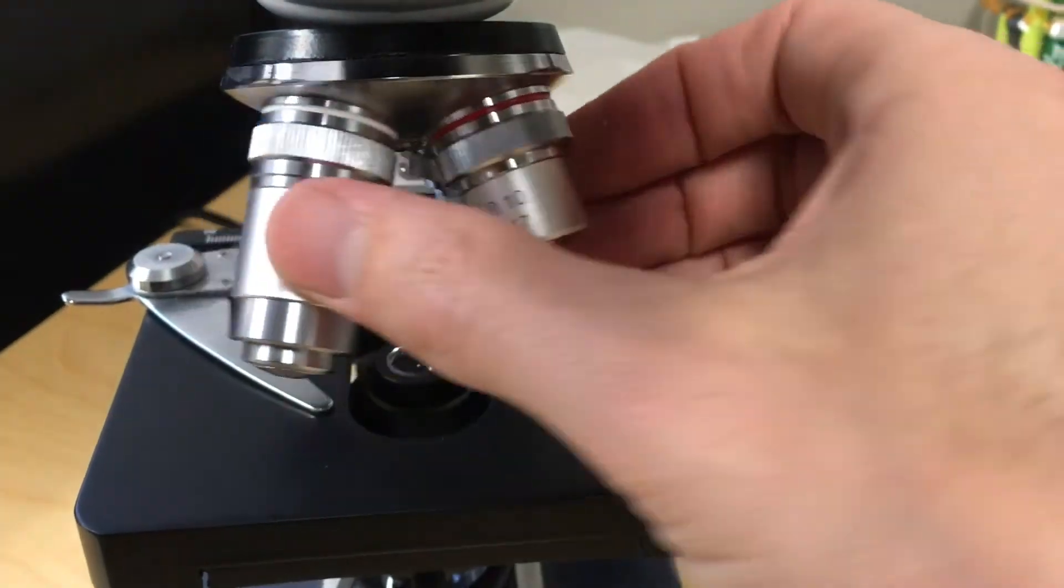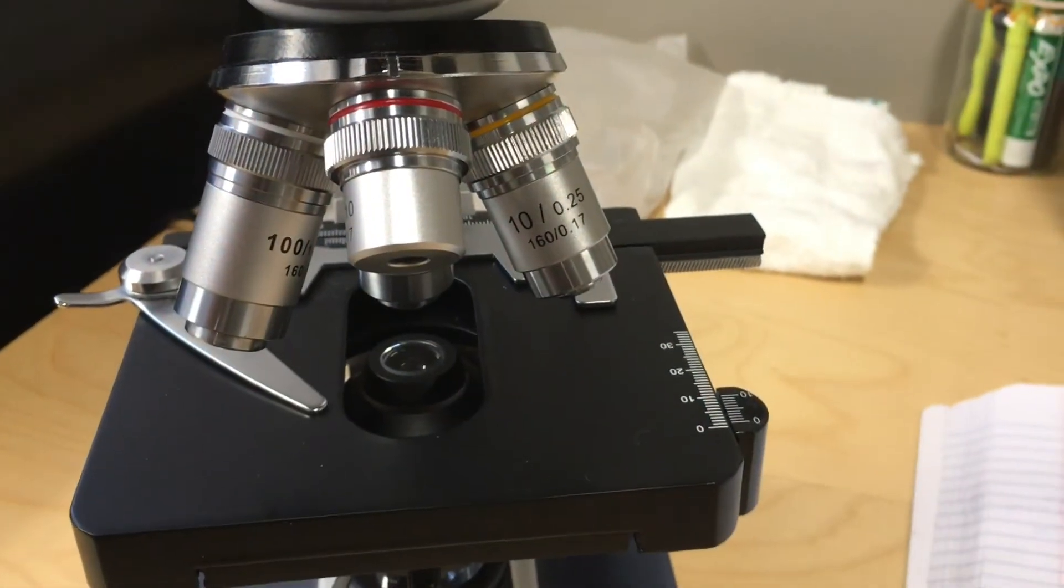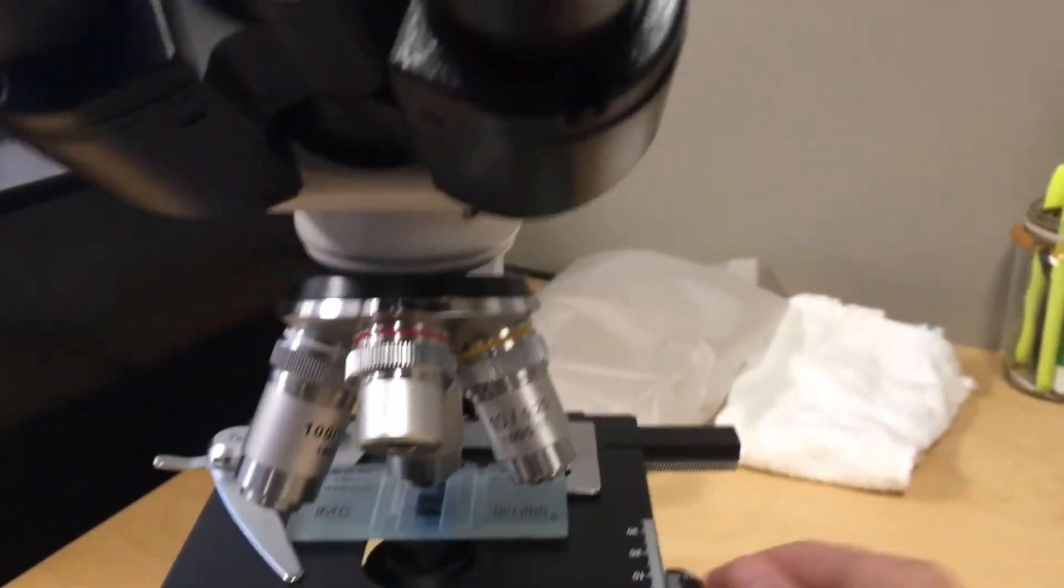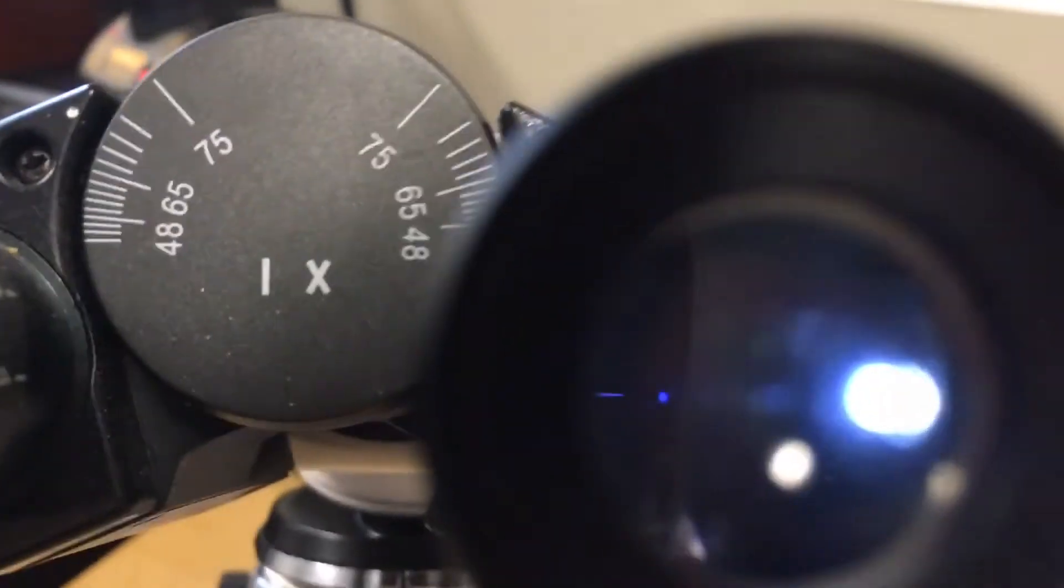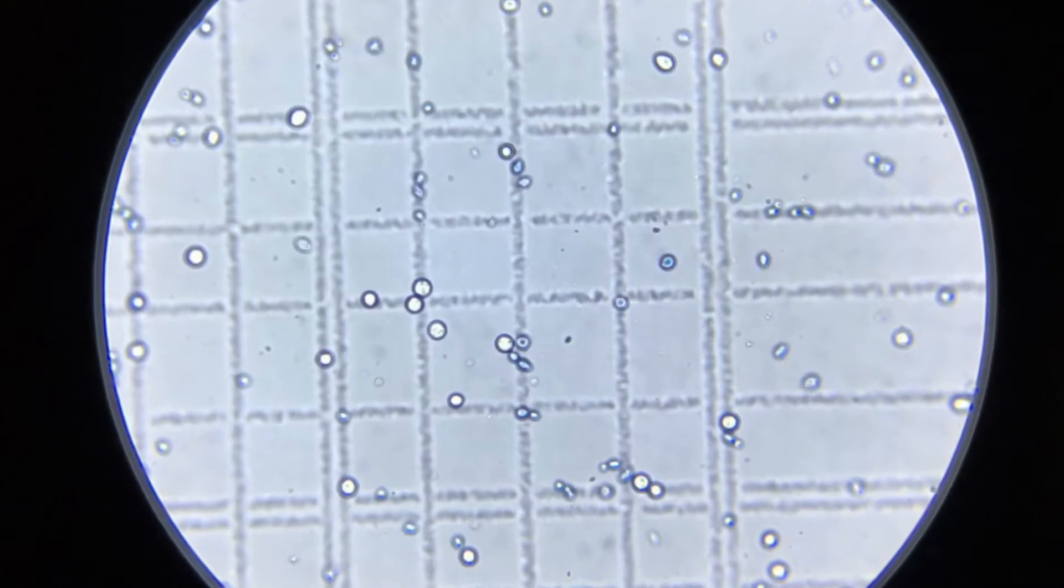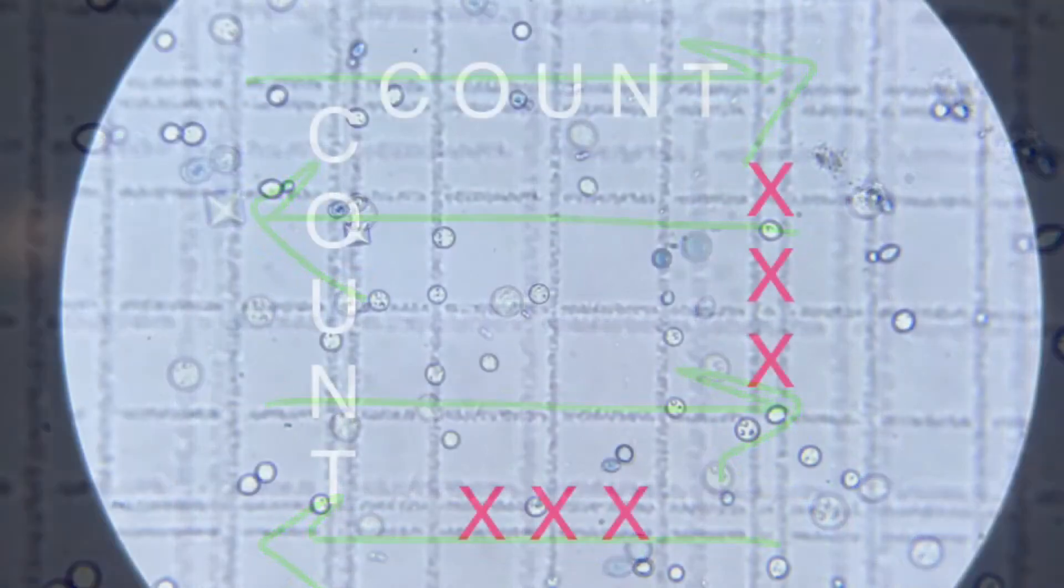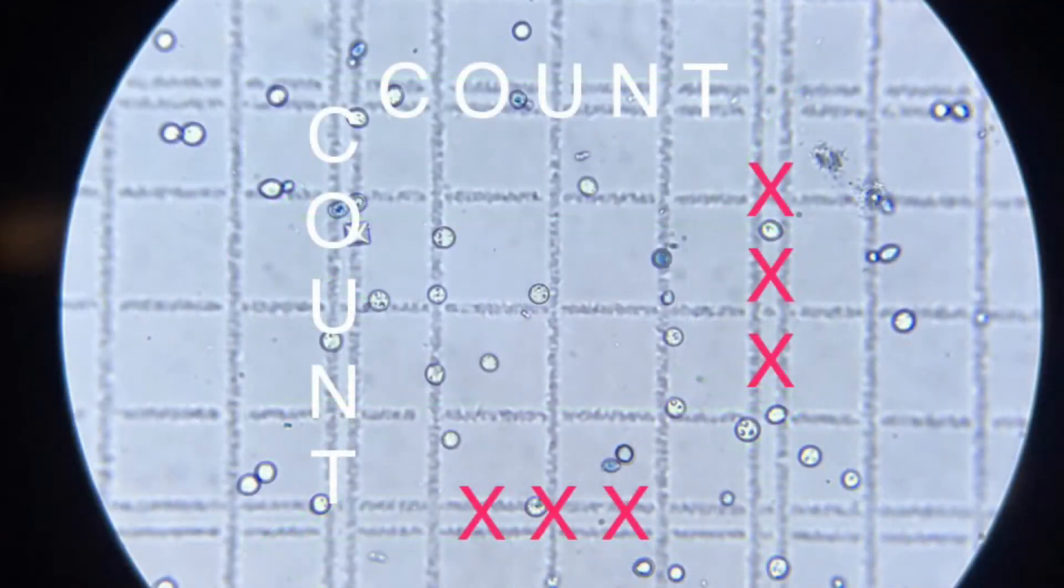Set your microscope to the 400x magnification to begin your count. You'll be counting five of the square grids that you see under the scope. Start in the upper left-hand corner for your first count. Use a consistent sweeping pattern for your count to ensure accuracy. You will only count cells touching two of the four sides. I use the upper and left sides.